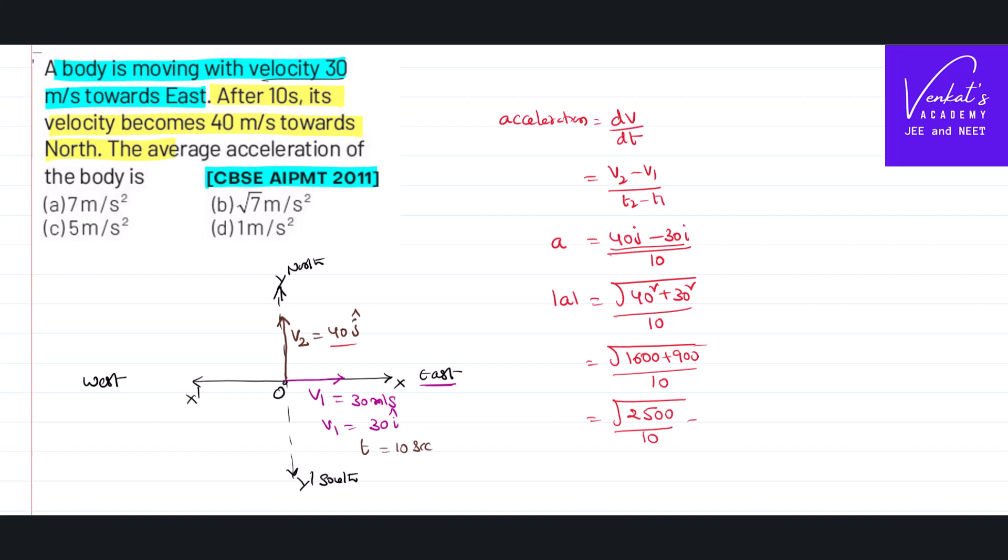That is square root of 2500 by 10. 2500, square root is 50, by 10, so the acceleration is 5 meters per second squared. That answer is there.